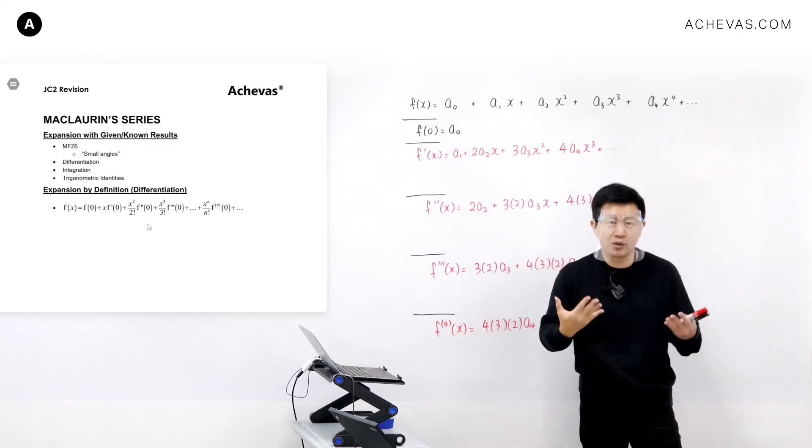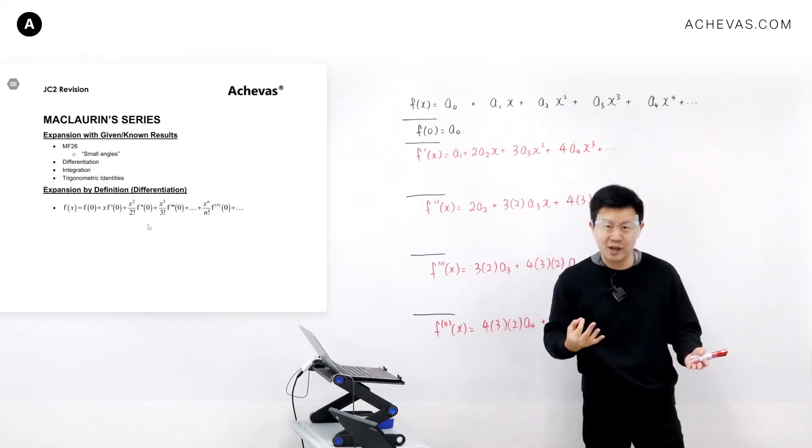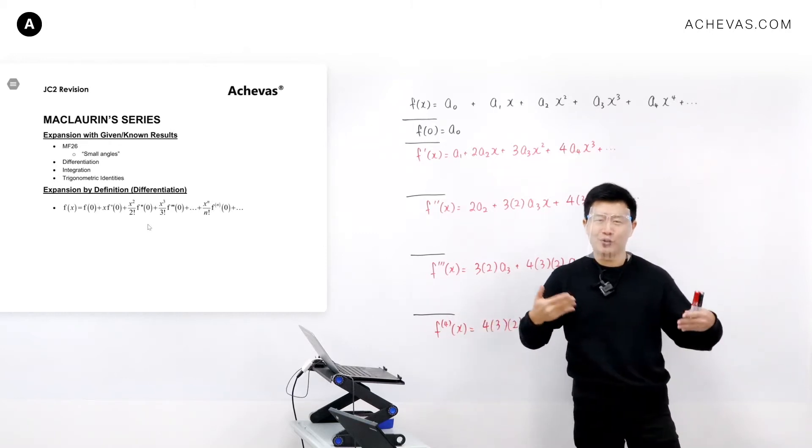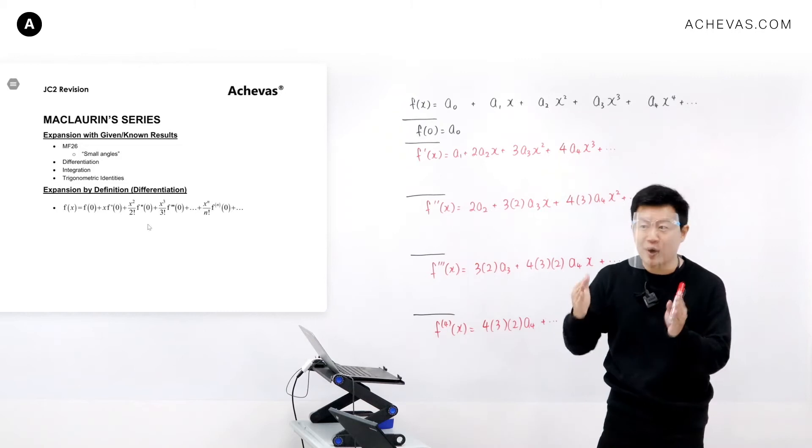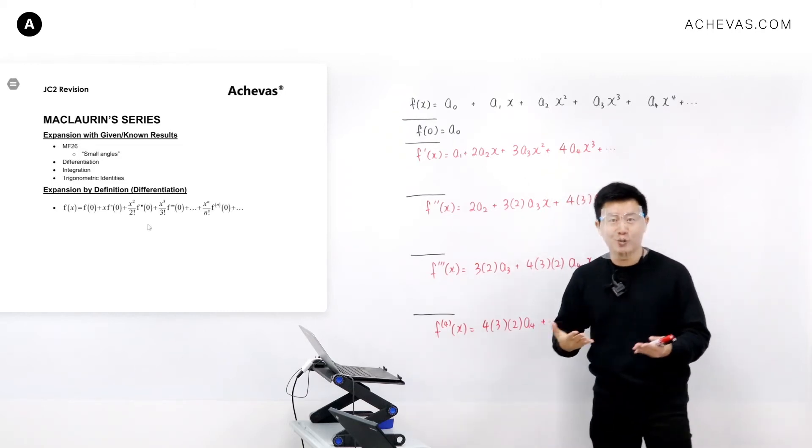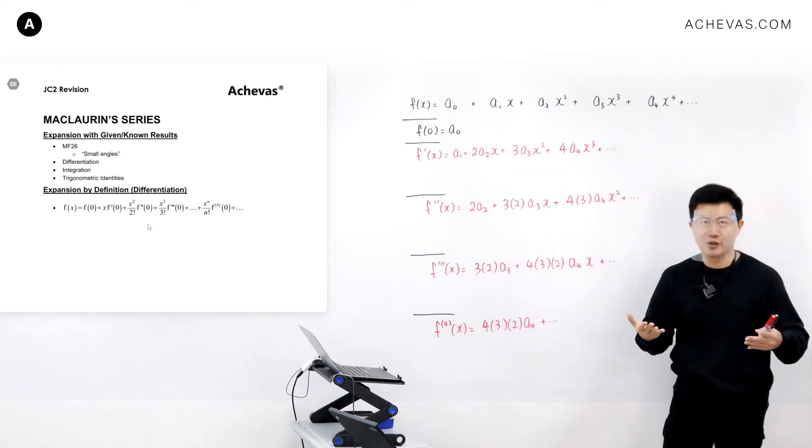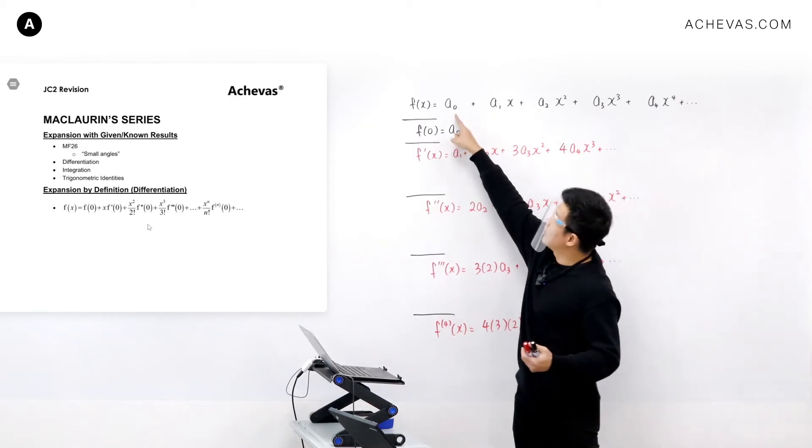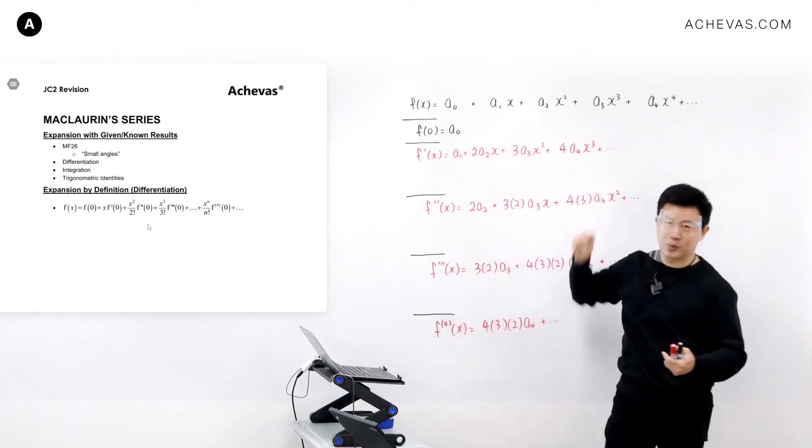That means my aim is just to find the coefficients. The polynomial is going to be in terms of x, so I don't need to try to find x. I just need to know what the coefficients represent, and we can use common sense to find ways to work out a0, a1, a2, all the way.